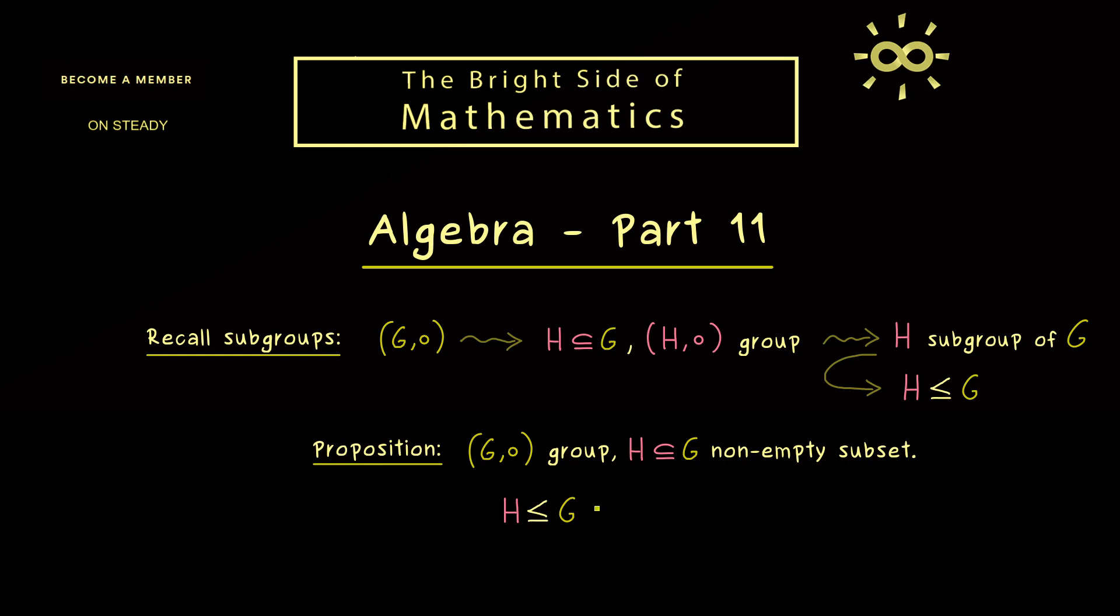Both conditions are really simple. The first one just tells us that the binary operation is well-defined on H, and the other one tells us that all the inverses are included in H.